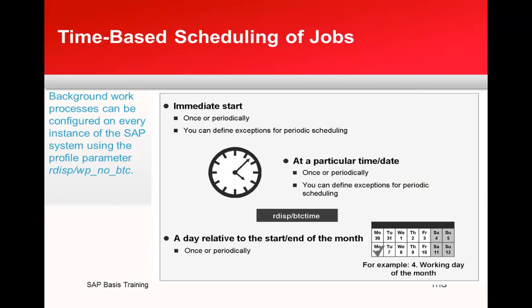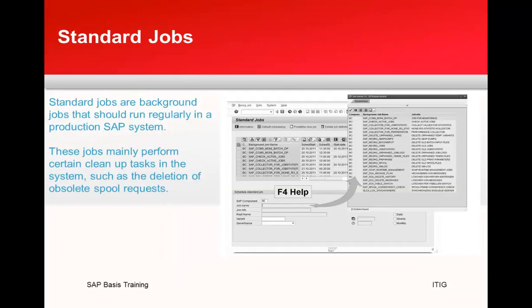Regarding time-based scheduling of jobs: background jobs can be configured on every instance of the SAP system using the parameter rdisp/wp_no_bdc. Jobs can be scheduled to run immediately, once, or periodically — for example, on a day relative to the start or end day of the month. There are also standard jobs in SAP for cleanup and maintenance work.